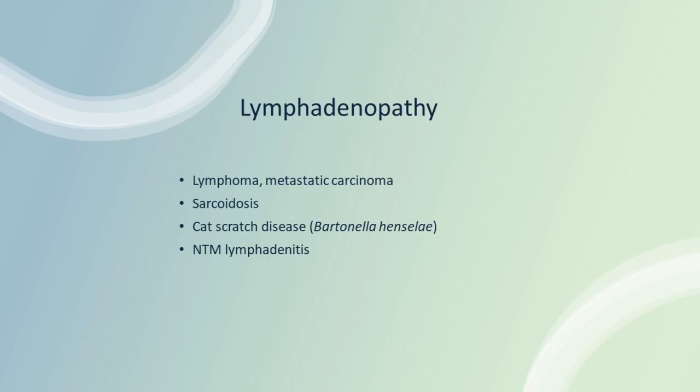If you get a patient with cervical lymph nodes, don't assume it's TB — it could be lymphoma, carcinoma, or sarcoid. Ask about cat exposure because cat scratch disease can present this way. Nowadays we are seeing a lot of non-tuberculous mycobacteria. A child with a unilateral posterior triangle node — think TB. But a unilateral anterior triangle node — think NTMs, and ask about exposure to pigeons or contact with gutter or pond water, which can cause NTM lymphadenitis.